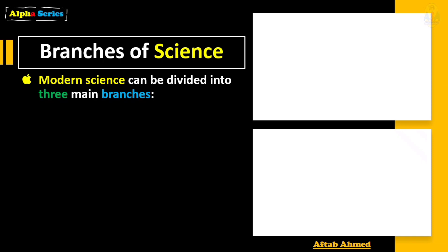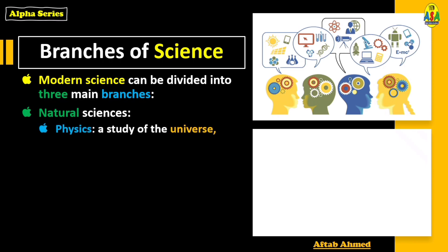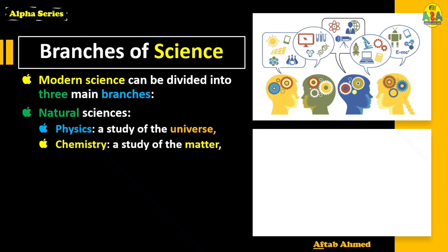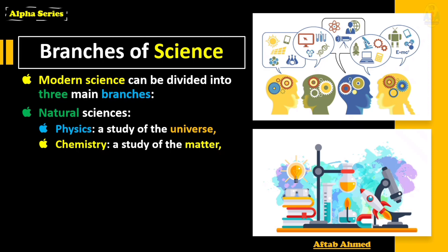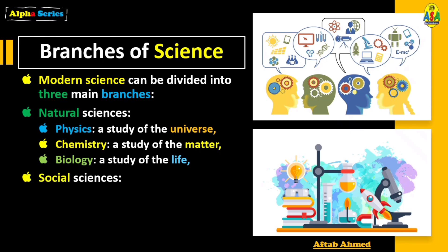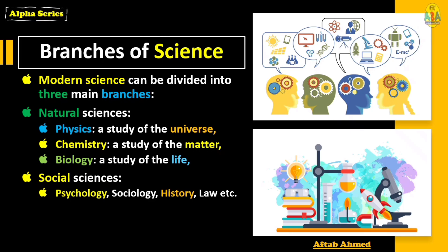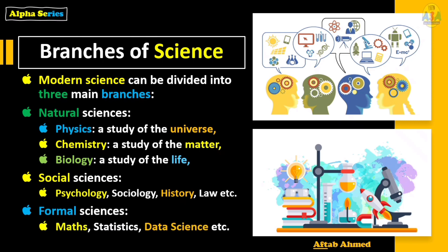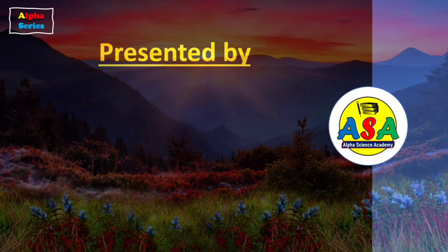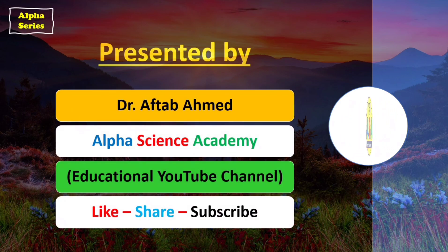Branches of science: modern science can be divided into three main branches. Natural sciences are further divided into physics, chemistry, and biology — physics is the study of the universe, chemistry is the study of matter, and biology is the study of life and living organisms. Social sciences include psychology, sociology, history, law, etc. Formal sciences include mathematics, statistics, data science, computer science, etc. Thank you very much for watching. Goodbye.